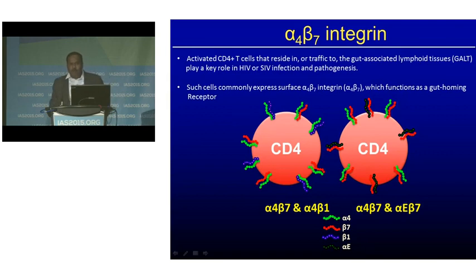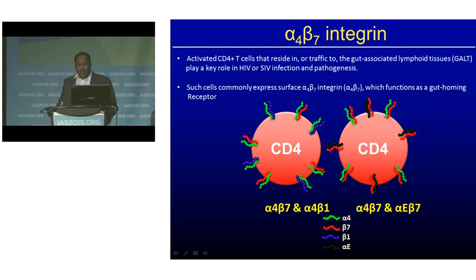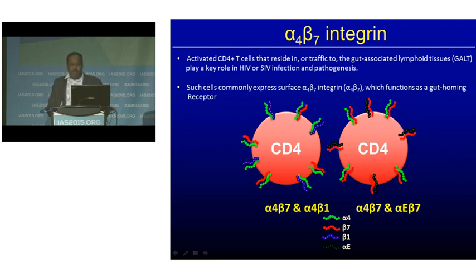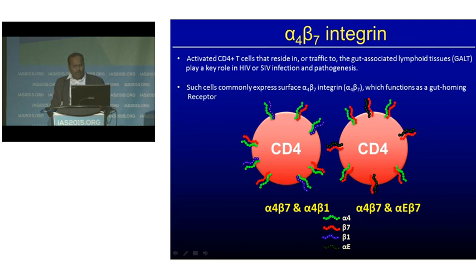We are interested in a molecule called alpha-4 beta-7 integrin. This integrin is basically expressed in activated CD4 T-cells, where it directs homing to the gut-associated lymphoid tissues and plays a key role in HIV pathogenesis. Such cells commonly express the surface protein integrin alpha-4 beta-7, which functions as a gut-homing receptor. It can appear in different combinations, like alpha-4 beta-7, alpha-4 beta-1, or alpha-beta-7, but we are mostly interested in the alpha-4 beta-7 form.